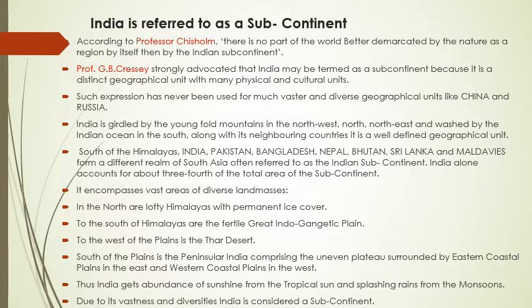In ko hum dekhenge ki kaun-kaun se points hain jiske tahat hum yeh naam bharat ko dete hain. Sabse pahle hum baat karenge India ki area ki — India ka area bahut bada hai, diverse hai, China aur Russia ki tarah. Phir uske baad India ke andar young fold mountains hain — uttar-pashchim mein, north mein, aur uttar-purv ke andar. Aur India ke dakshin ke andar hai Indian Ocean — Hind Mahasagar — jo is geographical unit ko define karta hai.